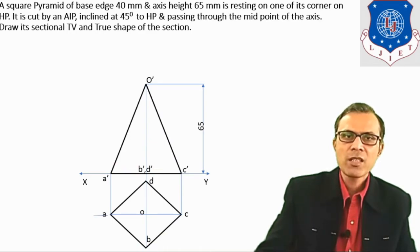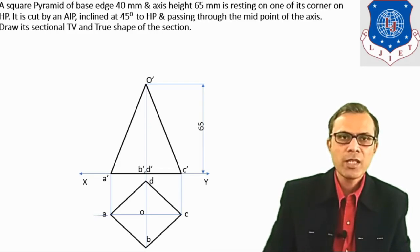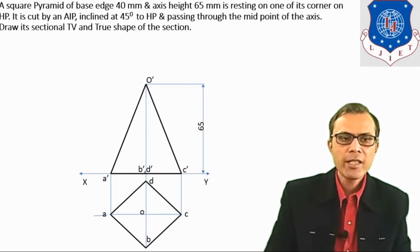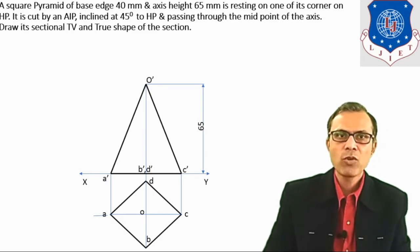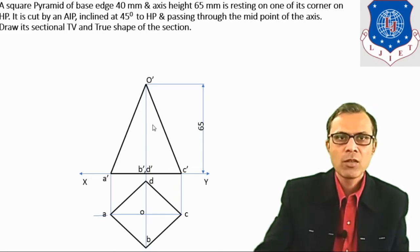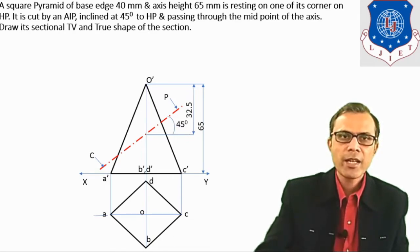That completes the first stage, drawing the same as in projection of solid. Now for the second stage, we have to consider the section plane and locate the position of the cutting plane according to the given conditions. The AIP is inclined at 45 degrees to HP and passes through the midpoint of the axis. The midpoint is at a distance of 32.5 mm from either the base or the apex. This is the position of the cutting plane CP.